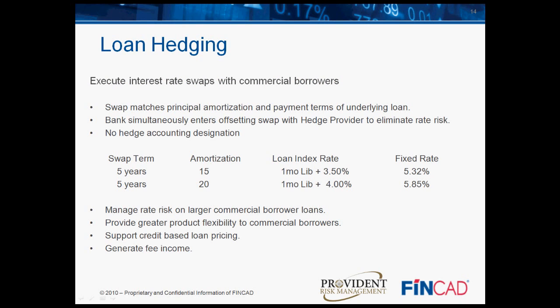A few key points to notice for commercial borrower swaps. Firstly, the swap must match the principal amortization and payment terms of the loan. The two offsetting or back-to-back swaps eliminate market exposure for the bank. There is no hedge accounting designation for these swaps, and accounting is very simple and straightforward. Banks use back-to-back swap programs to manage rate risk on larger commercial loans, to provide greater product flexibility to their commercial borrowers, to support credit-based loan pricing, and to generate fee income.